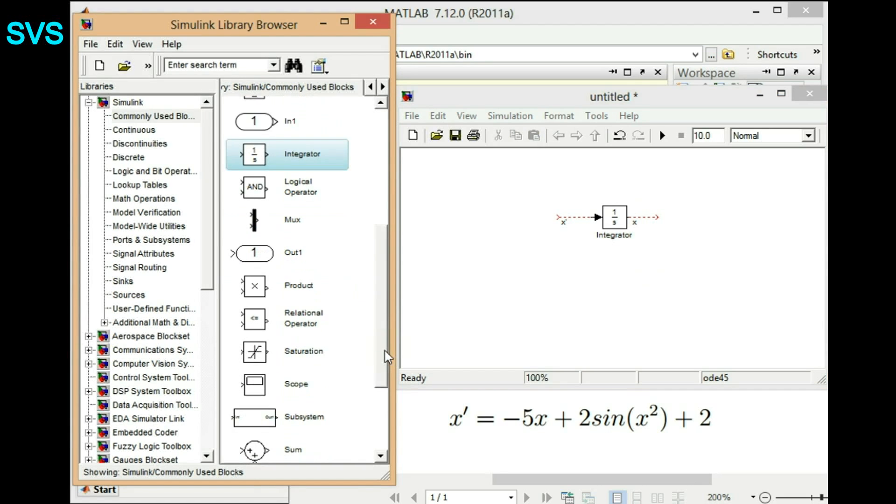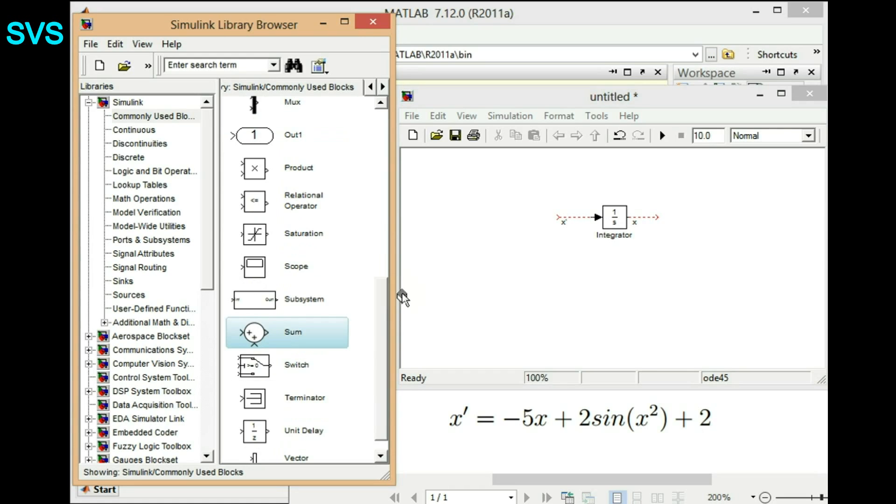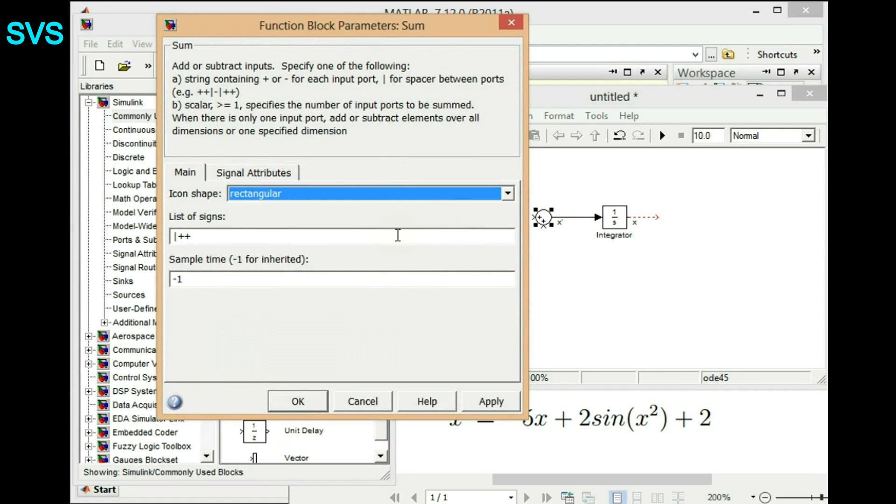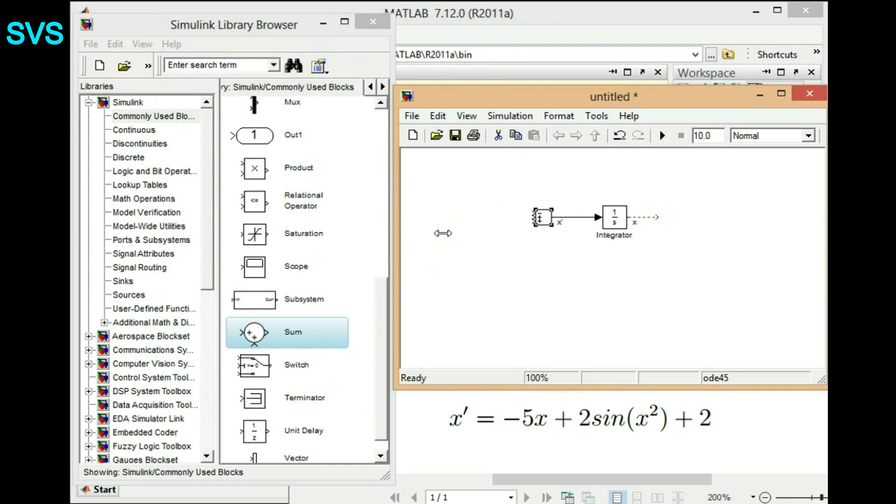Let's try to implement what's x dash. X dash is summation of three things: minus 5x, 2 sine squared x, and 2. We'll choose a summation block and then we'll double click it and then we'll assign the signs, that is minus, plus, and plus. Let's drag it and then we'll adjust each and every parameter.